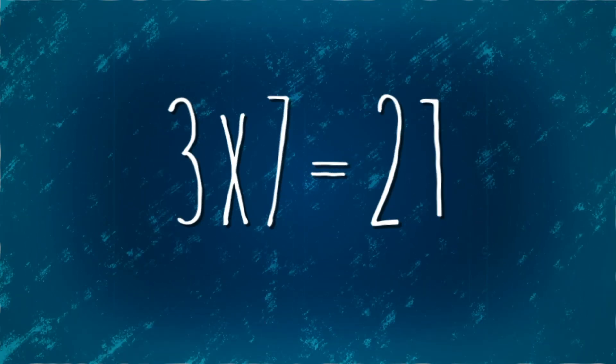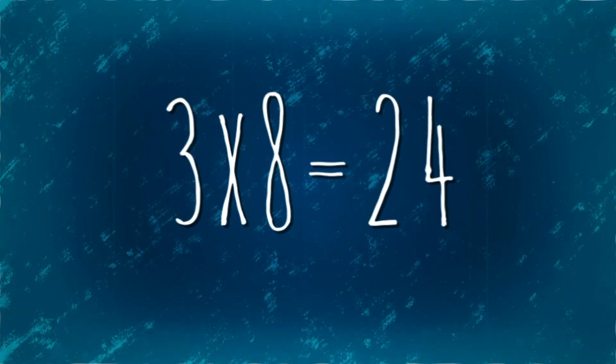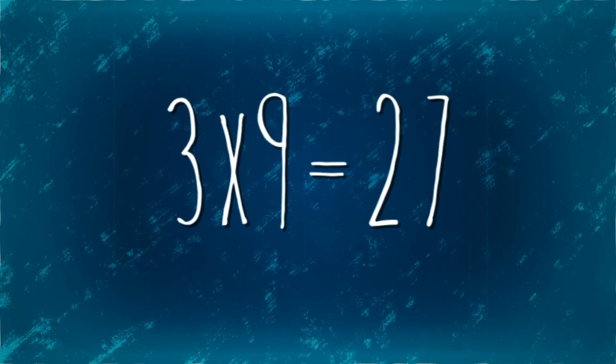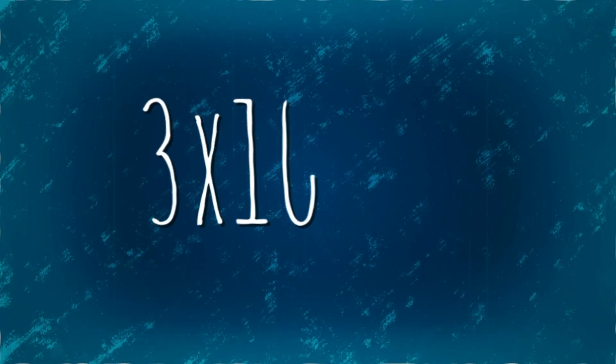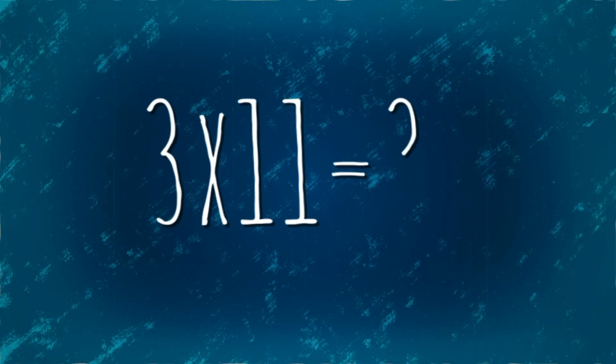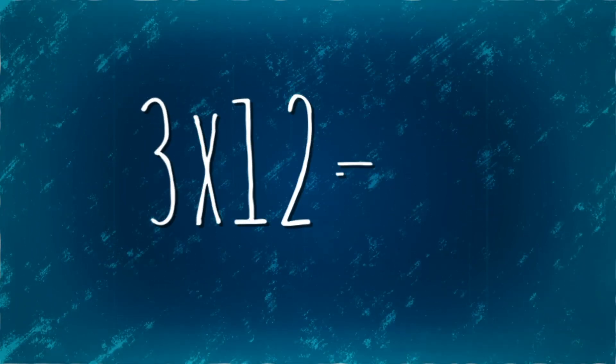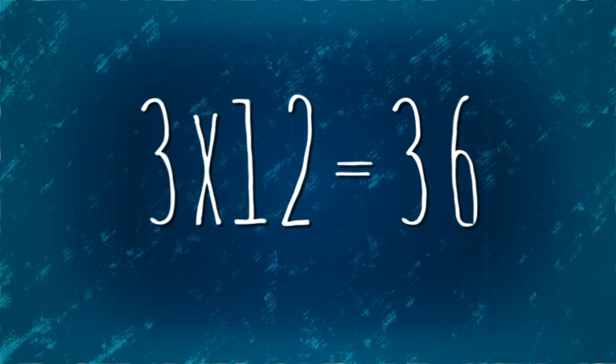Three times seven is twenty-one. Three times eight is twenty-four. Three times nine is twenty-seven. Three times ten is thirty. Three times eleven is thirty-three. Three times twelve is thirty-six.